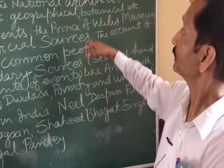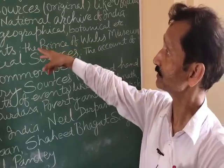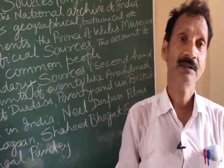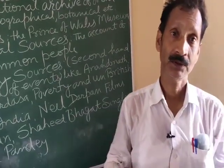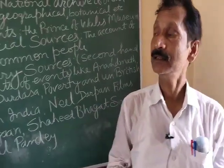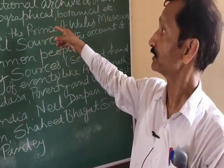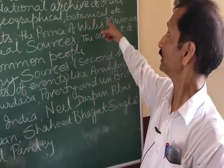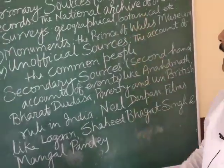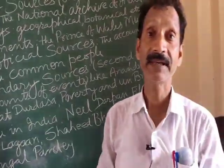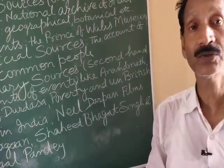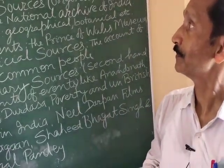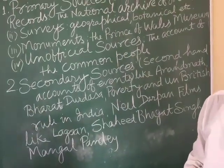The second point in primary sources is surveys. The British conducted surveys, meaning they studied the geographical factors in India. They also surveyed botanical, geological, and forest aspects. These surveys are also good sources of information for the modern period in India.